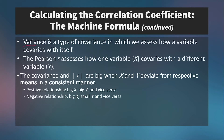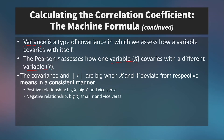We need to remember that variance is a type of covariance in which we assess how a variable co-varies with itself. With the Pearson r, we are assessing how variable x co-varies with a different variable, y — how much does the variance in x also explain the variance in y? The covariance and the absolute value of r are large when x and y deviate from their respective means in a consistent manner: a big x with a big y for a positive relationship, or a big x with a small y for a negative one.